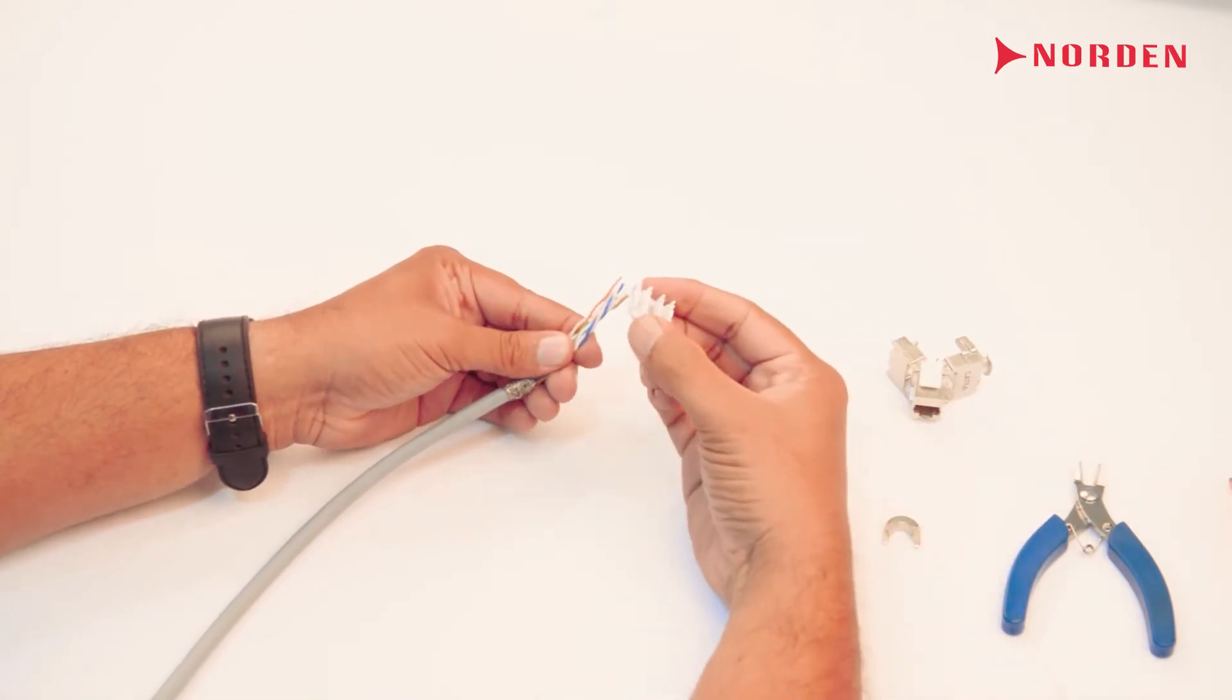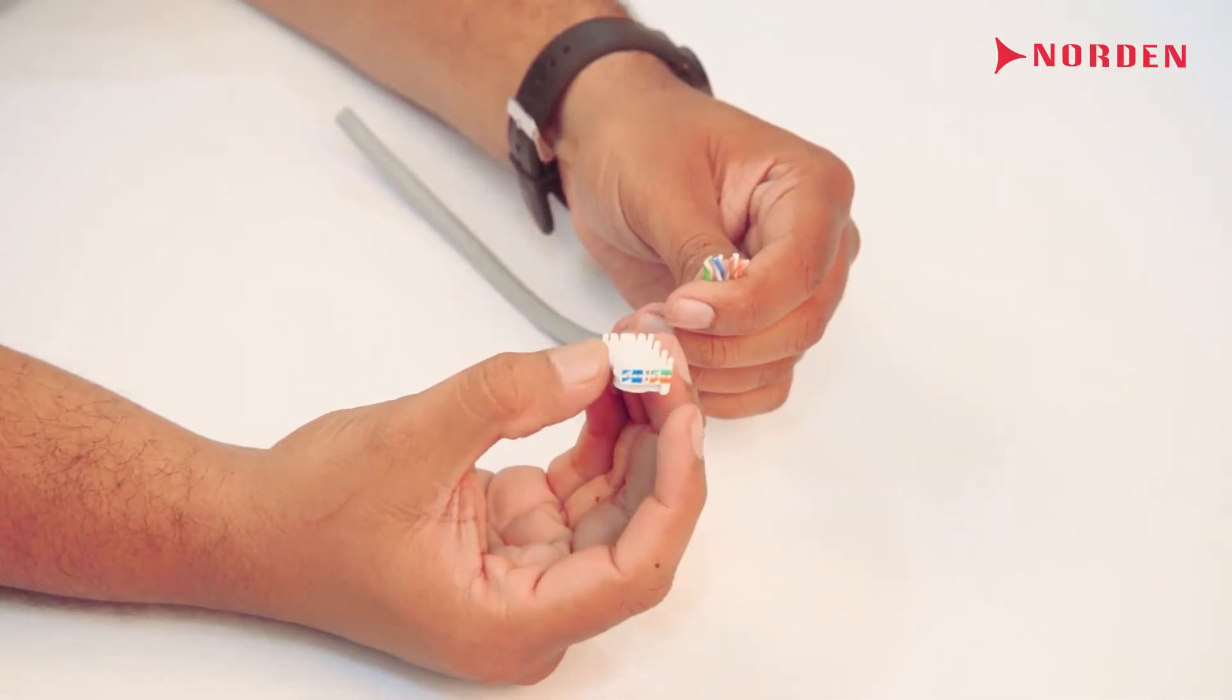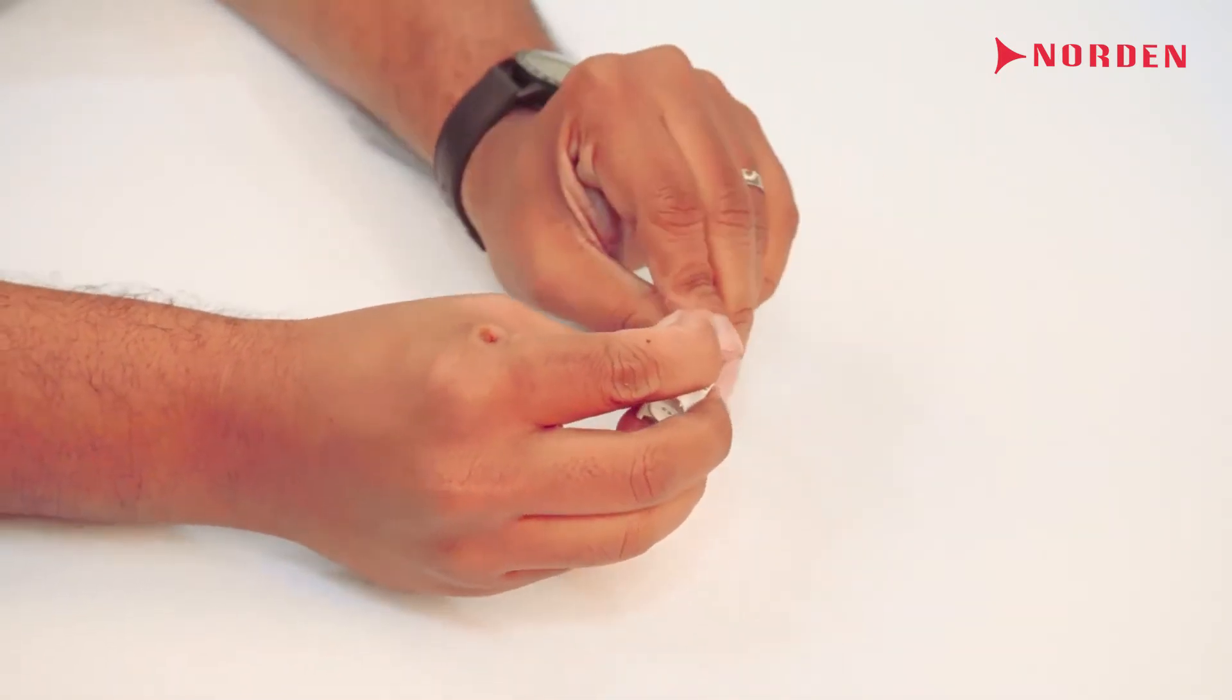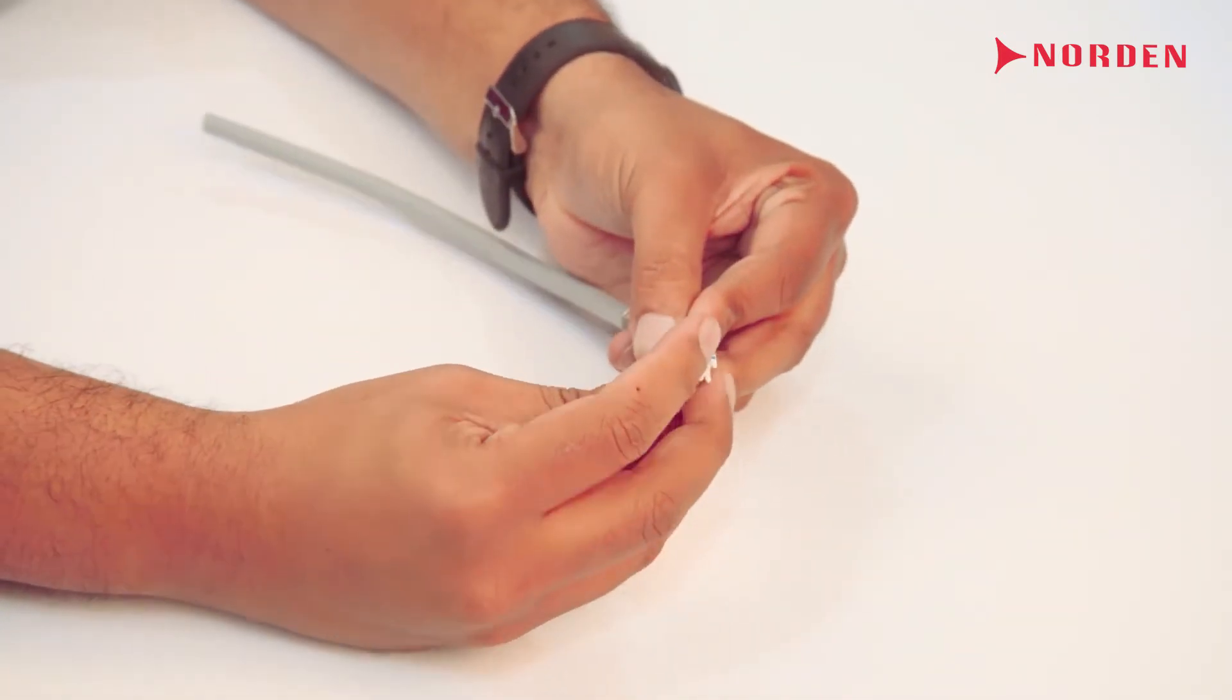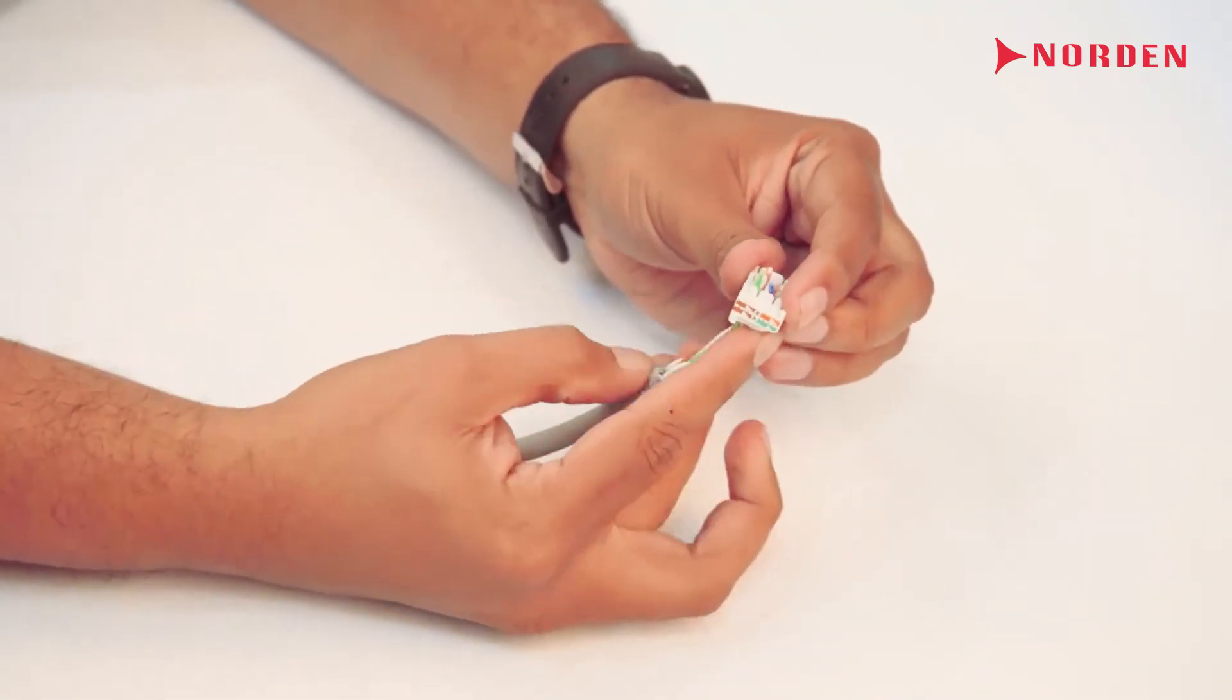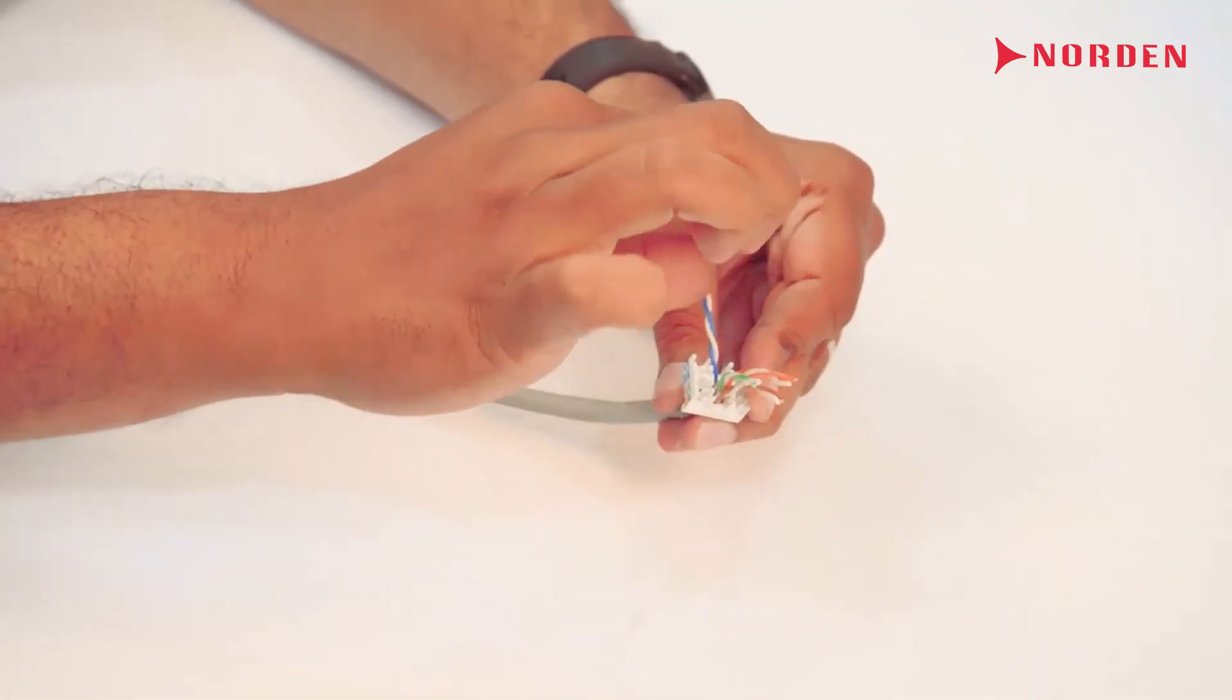The cap has printed color codes for 568A and 568B wiring on both sides. Place the cable inside the termination cap and insert each pair as per your recommended color code.